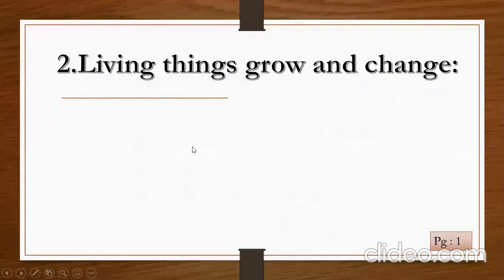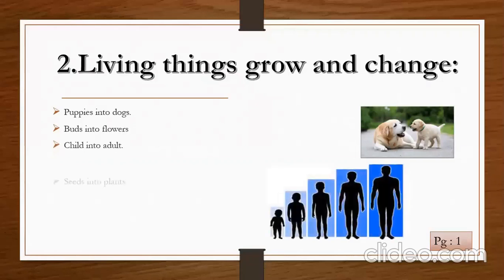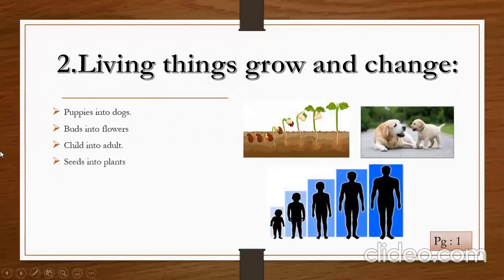How do they grow and change? Like puppies into dogs, birds and flowers, child into adult, seeds into plants. The heading is: living things grow and change. This is how the puppy changes into a dog, a seed changes into a plant, and a baby or child changes into an adult. All things grow and are going to be changed with time.